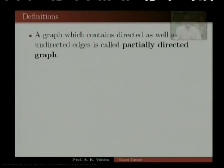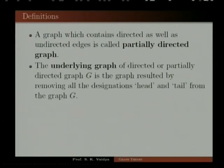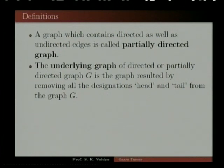A graph which contains directed as well as undirected edges is called a partially directed graph. The underlying graph of a directed or partially directed graph G is the graph obtained by removing all the designations of head and tail from the graph G.